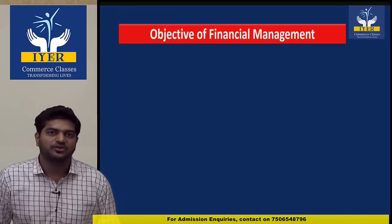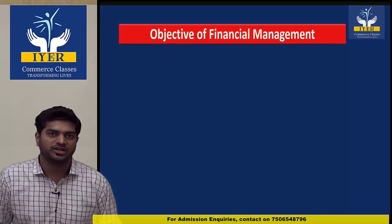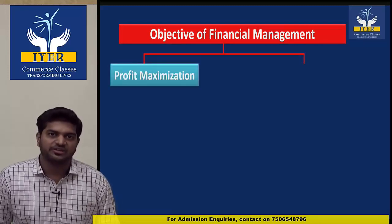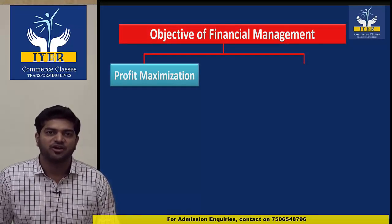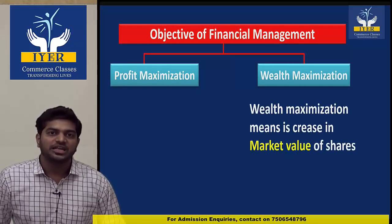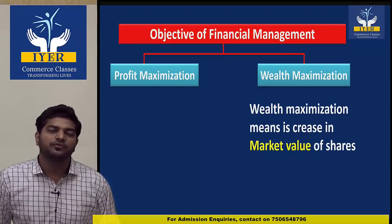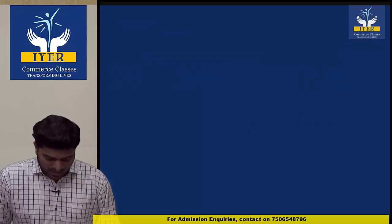Now the objectives of financial management — क्यों करना है? There are two objectives. First is profit maximization. हर company को profit जरूरी है। Without profit, a company cannot survive. Profit is a tool for measuring the success of a business. Profit maximization leads to wealth maximization. Wealth means increase in market value of shares — equity shares and preference shares. If their value is increasing in the future, we say the company's wealth maximization is happening.